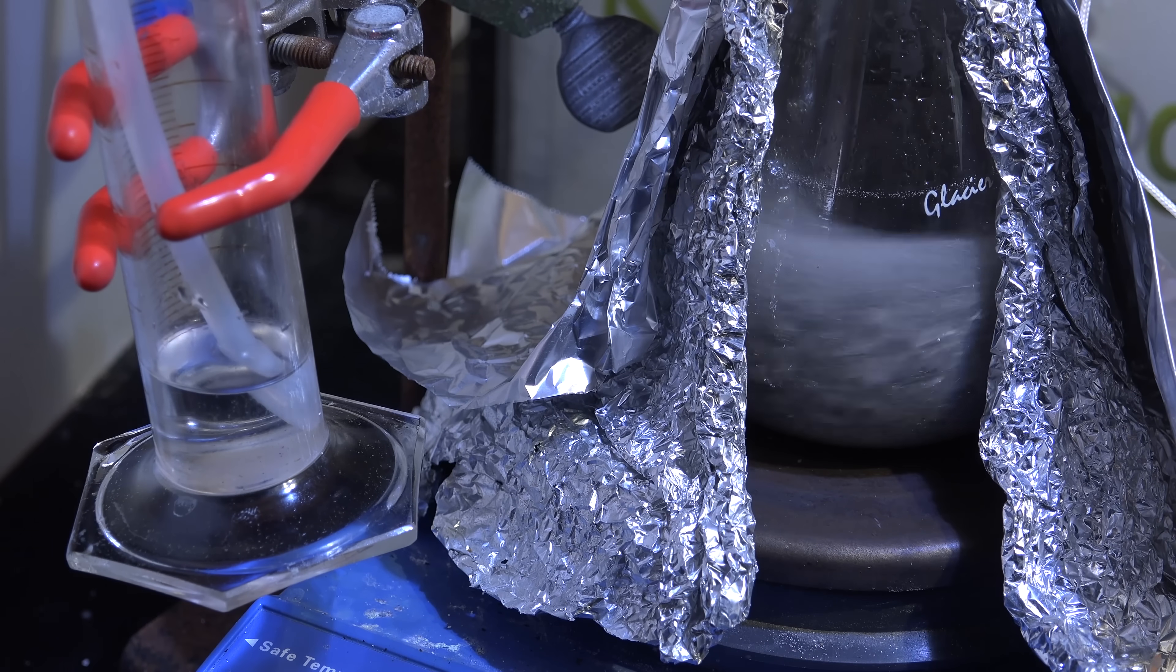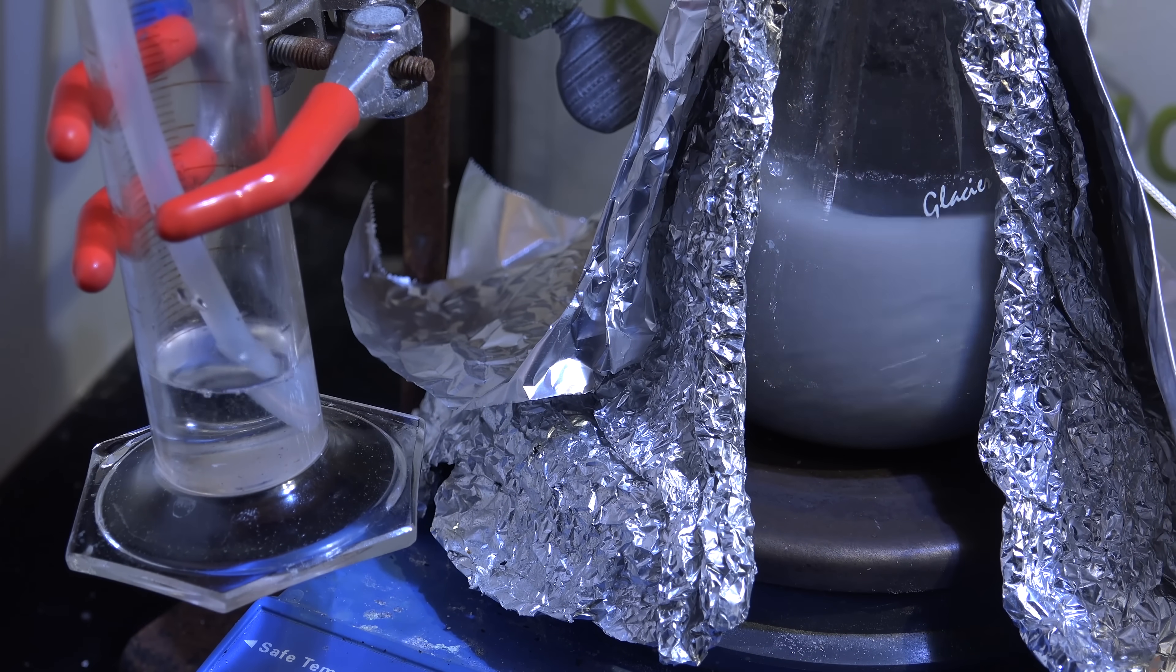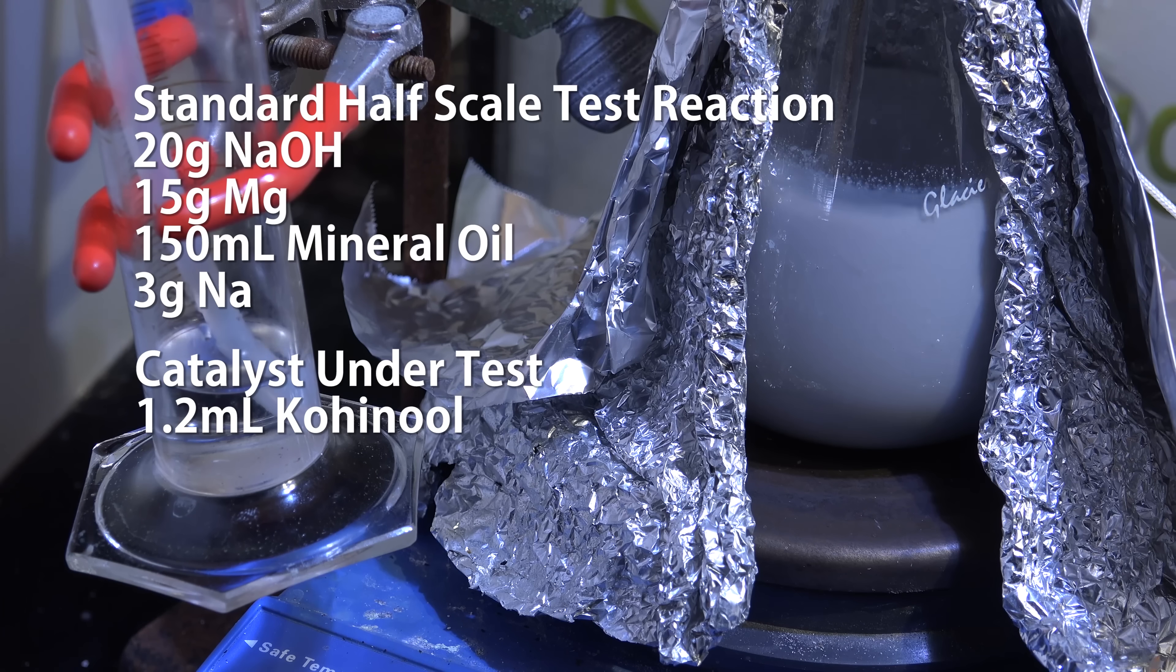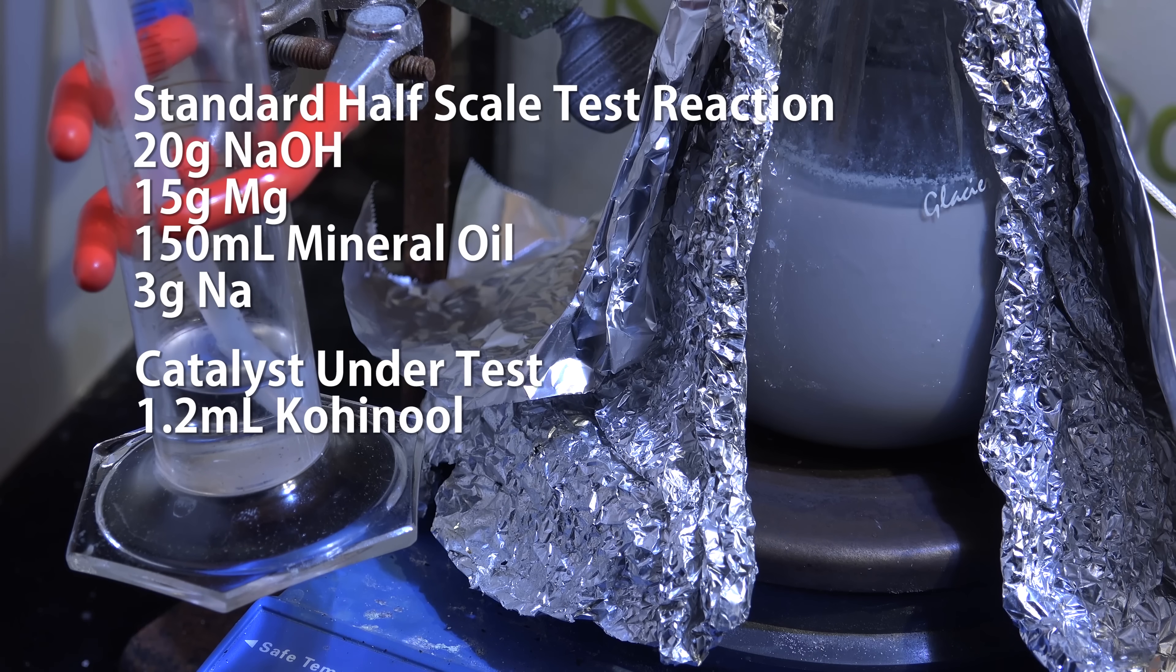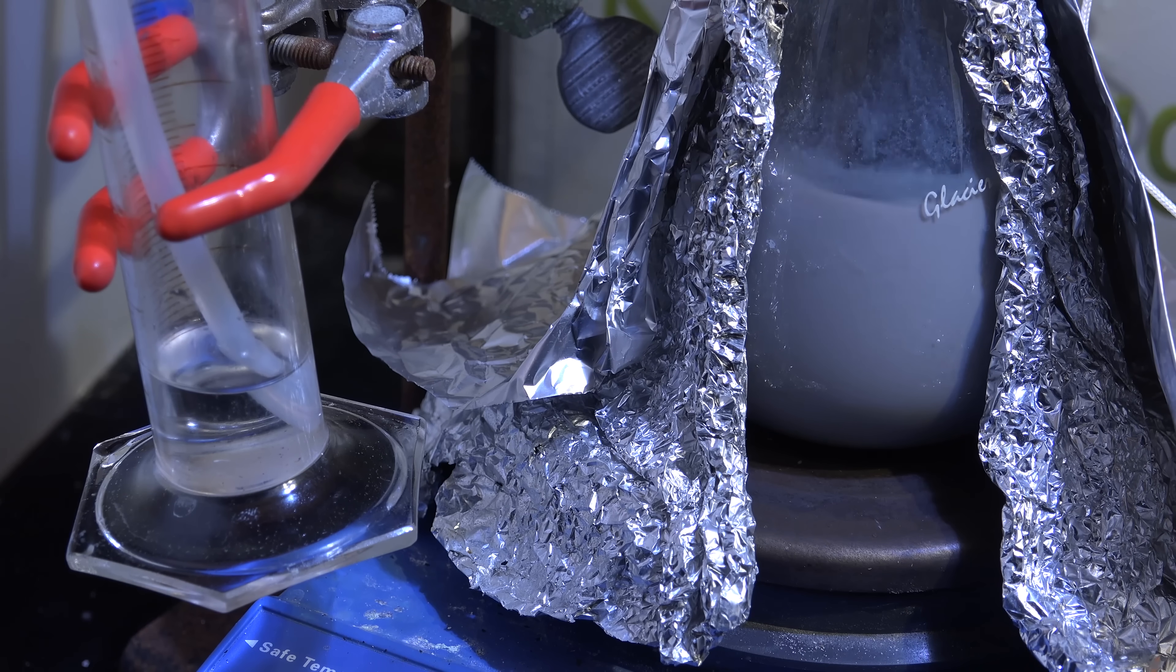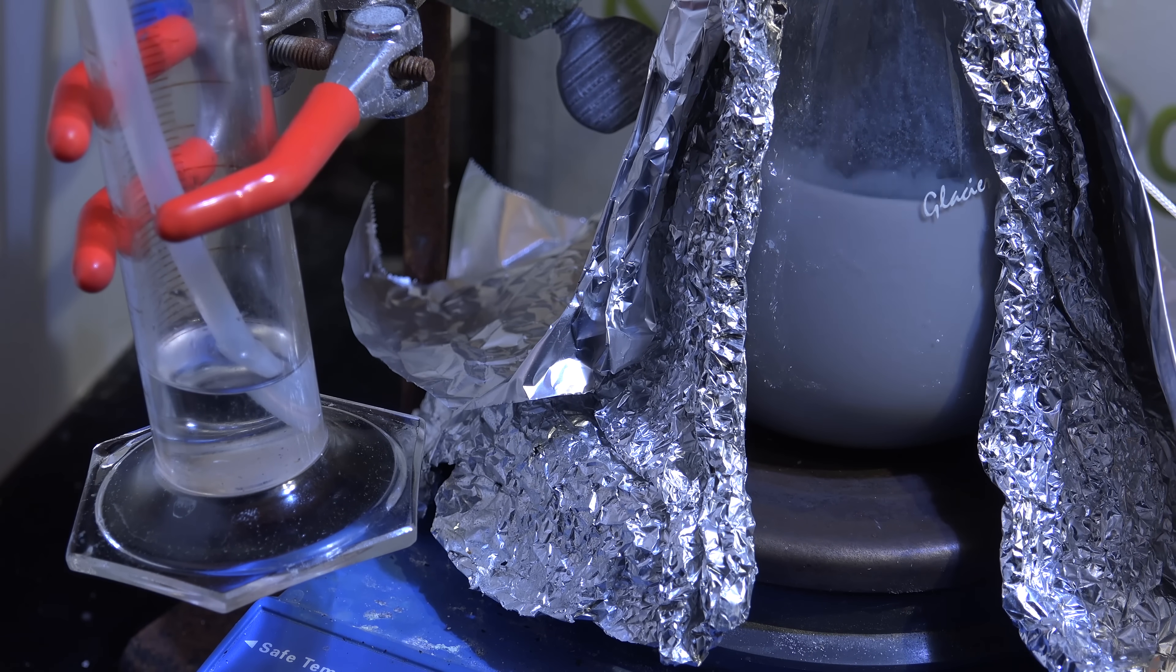So the first substance to try was Cohanol and once again I ran it under the half-scale stoichiometric run consisting of 20g of sodium hydroxide, 15g of magnesium, 450mL of mineral oil, 3g of sodium metal and 1.2mL of Cohanol. Interestingly enough it partially worked. The bubbling was steady and continued for a solid 10 hours before stopping.